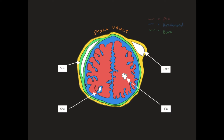Superficial to the arachnoid mater, but deep to the dura mater, is a potential space called the subdural space. Under normal circumstances, this does not exist, and it's only visible under pathological scenarios. When elderly patients and alcoholic patients typically have head injuries, they rupture small venous channels running through the subdural space, and therefore results in a subdural haematoma that occupies the subdural space. This is highlighted here.